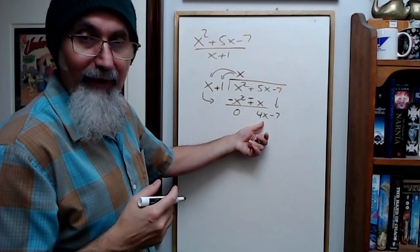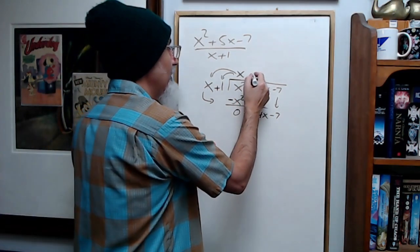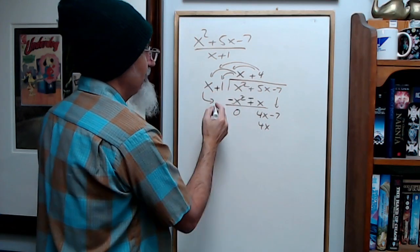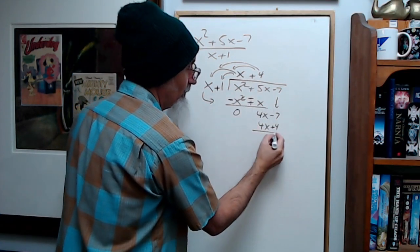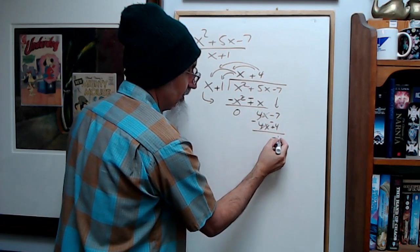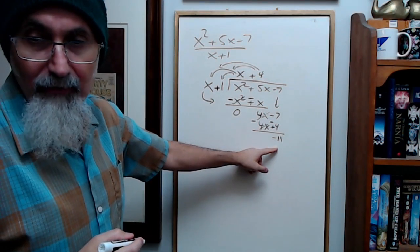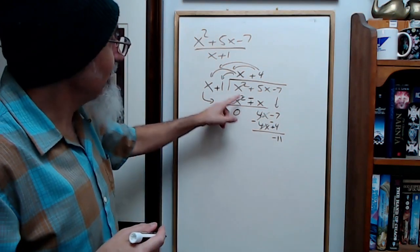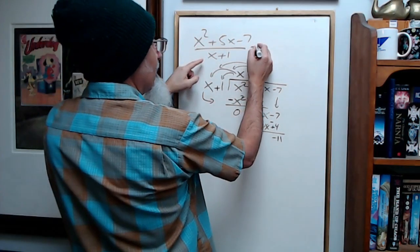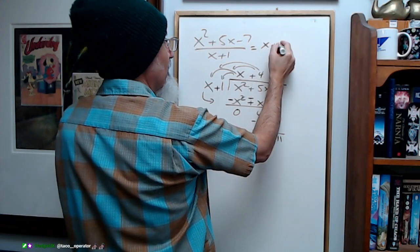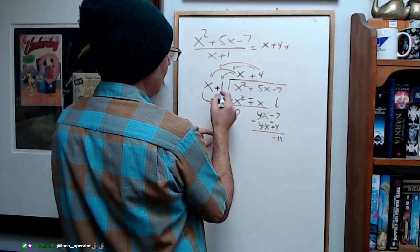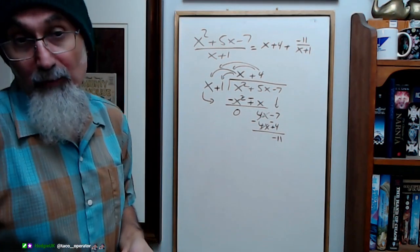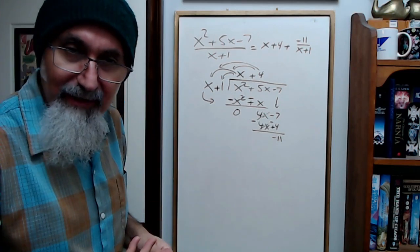And you ask yourself, how many times does x go into 4x? Well, it goes 4 times. So you go plus 4. This multiplies this and this again. X times 4 is 4x. 4 times 1 is 4. Change the signs and add up. This kills this. This becomes negative 11. Does x go into negative 11? No, it doesn't go anymore. So the way you write this is, this divided by this is equal to x plus 4 plus negative 11 over x plus 1. That's what it is. This is called the division statement.